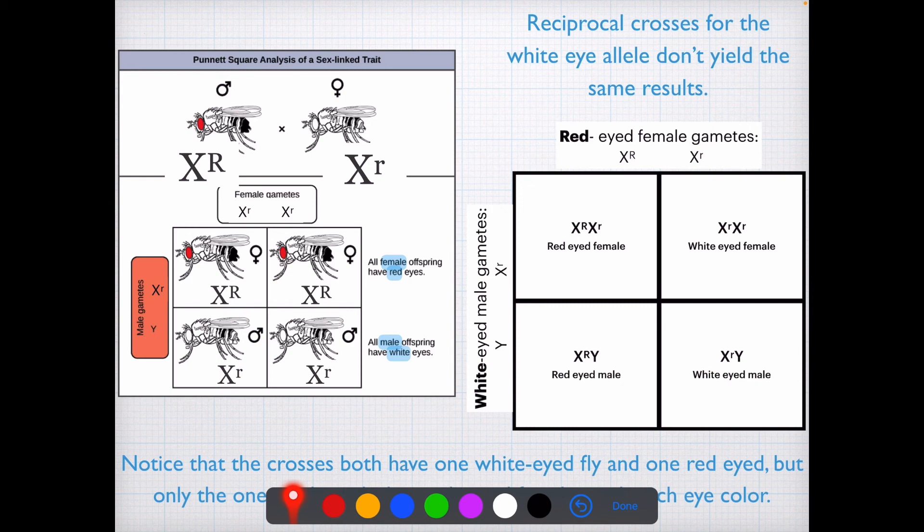So here again we have different results. We have 50% red-eyed females, 50% white-eyed females, and 50% red-eyed males, 50% white-eyed males. But again, overall, if you looked at the whole population, the males are going to be more likely to have white eyes than females.